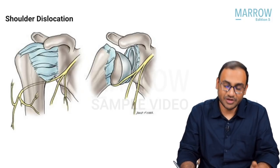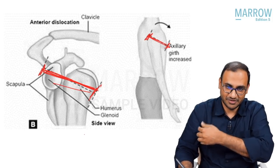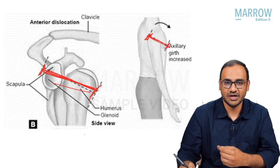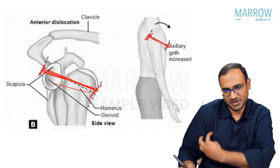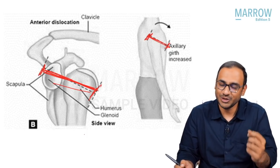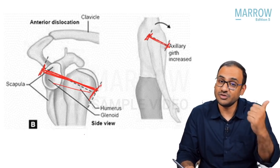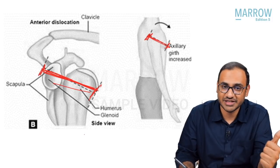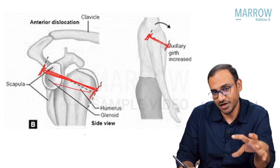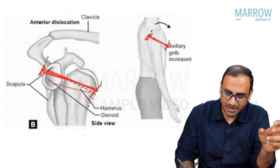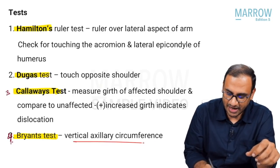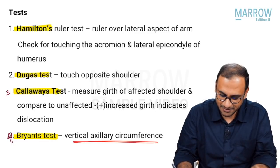Bryant's test: the vertical circumference or vertical axis of the shoulder will decrease because of the dislocation. It is not the most important test, but do not forget Hamilton ruler test, Duga's test, and Callaway's test — these are the three key tests. Bryant's test, where the vertical axillary circumference changes, is also used to diagnose shoulder dislocation.